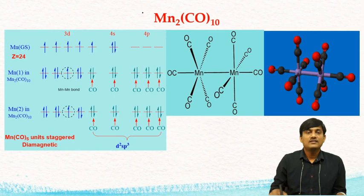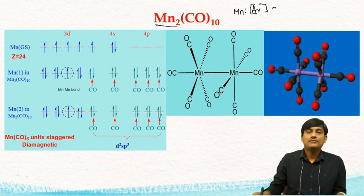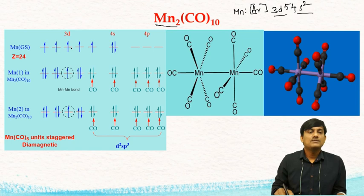In Mn₂CO₁₀, we have two manganese atoms. The electronic configuration of manganese is argon, 3D5, 4S2. So in the d and s orbitals we have 7 electrons, and these 7 electrons will be filled in the standard manner.